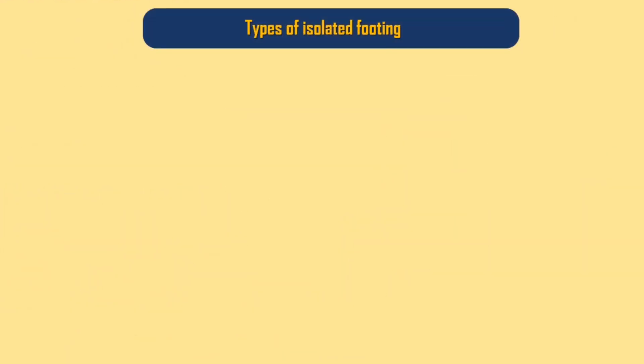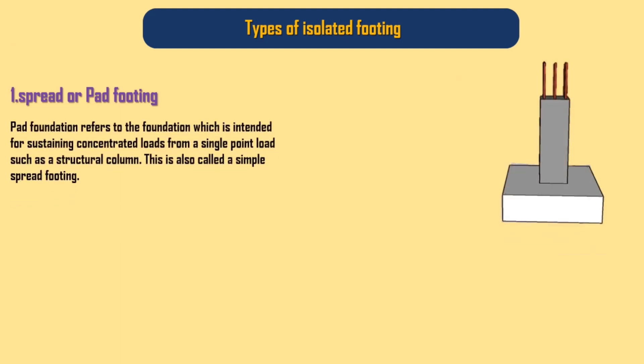Types of isolated footing. 1. Spread or pad footing: pad foundation refers to the foundation which is intended for sustaining concentrated loads from a single point load such as a structural column. This is also called a simple spread footing.